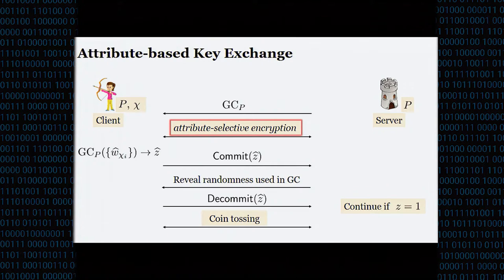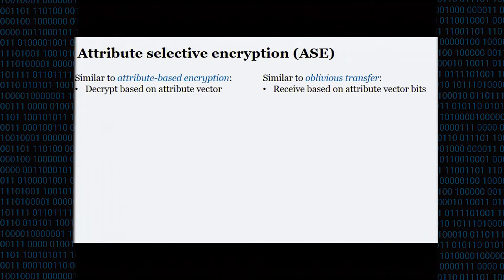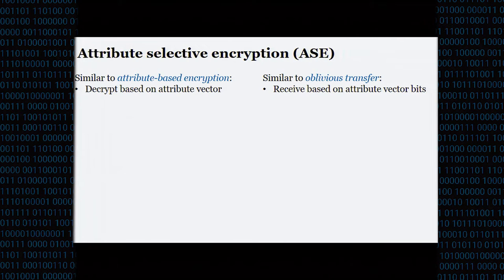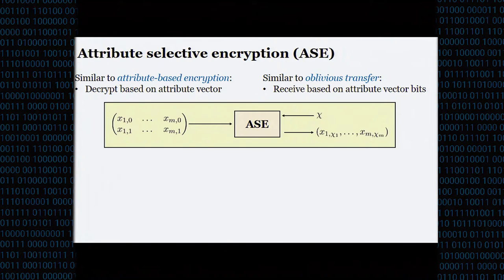The final step is to dig into what attribute-selective encryption is. We can view it as a combination of attribute-based encryption and oblivious transfer. It's similar to ABE in the sense that a party decrypts based on its attribute vector, and similar to oblivious transfer in the sense that the party receives one of two messages based on its attribute vector. In some sense, it's a box where one party inputs two messages and the other party inputs an m-bit attribute vector and receives the messages that correspond to those attributes.